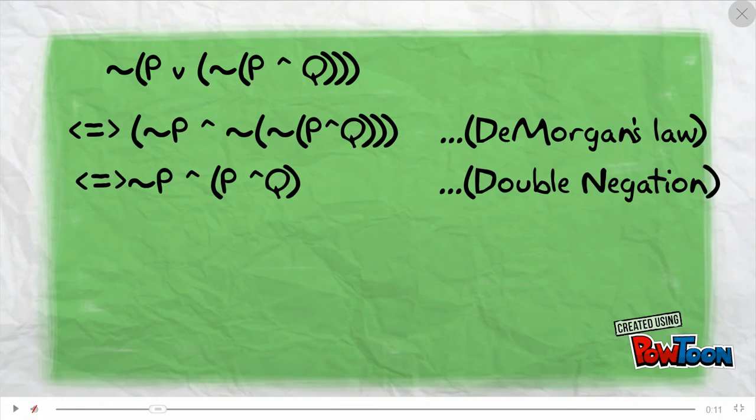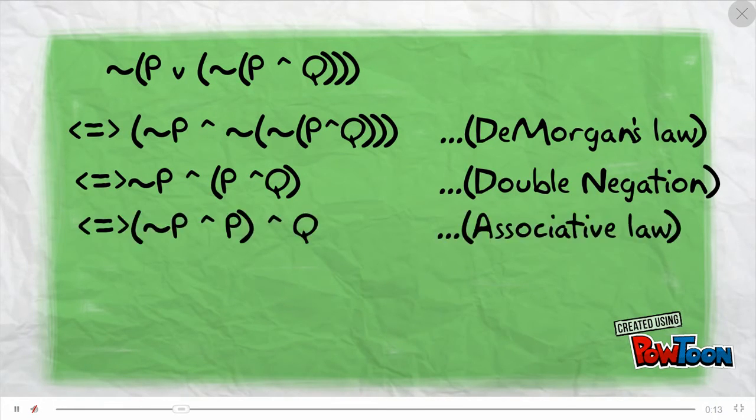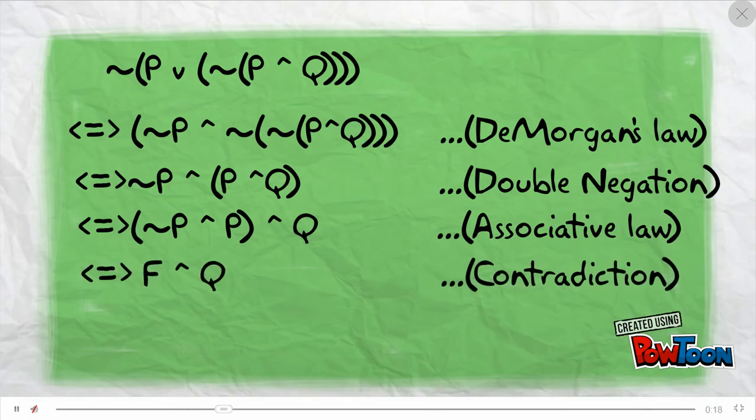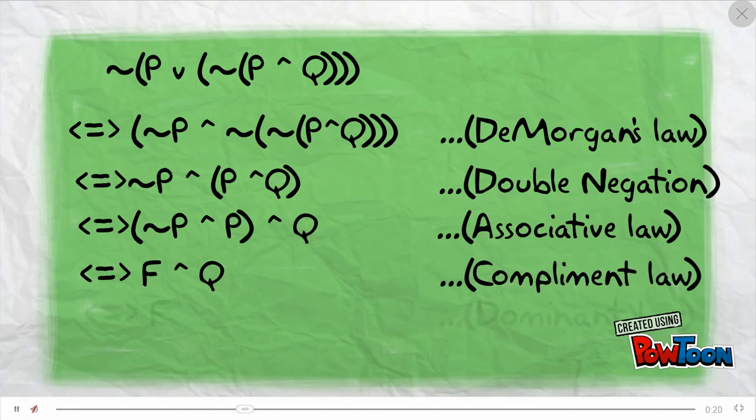Take the first statement. First, we'll apply the negation to the bracket, and according to De Morgan's law, the first statement gets modified to the following. Now we can see double negation which gets cancelled and the modified formula becomes this.